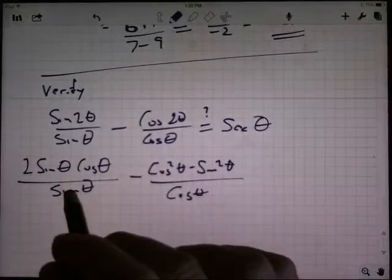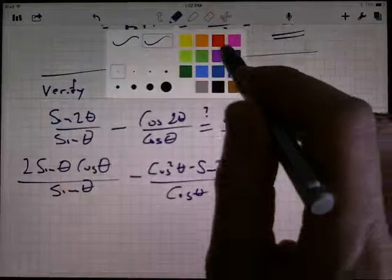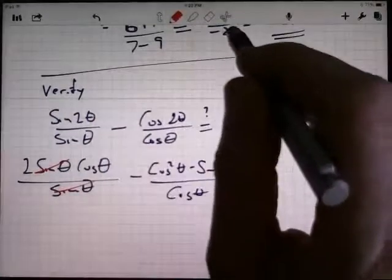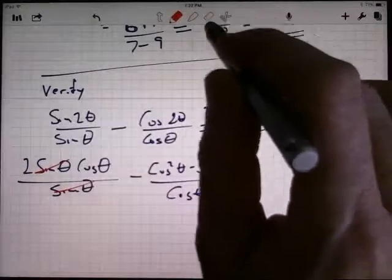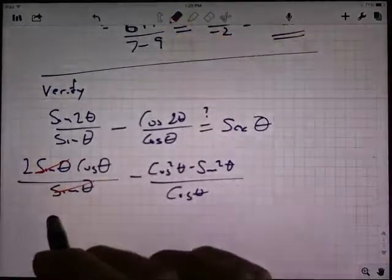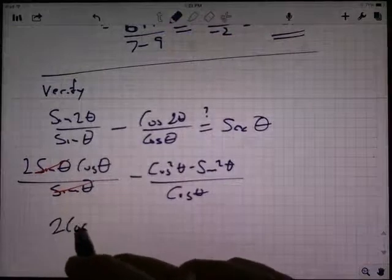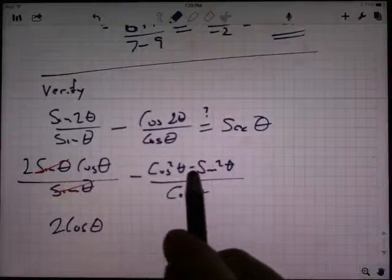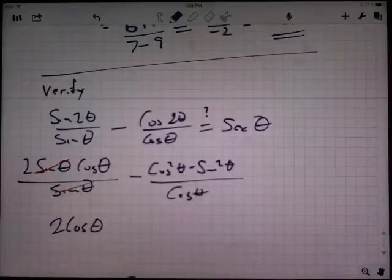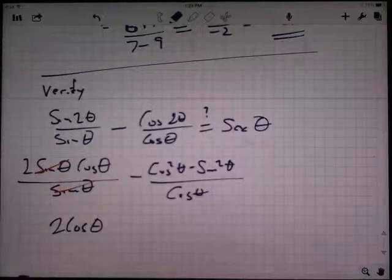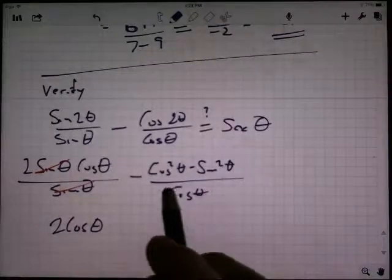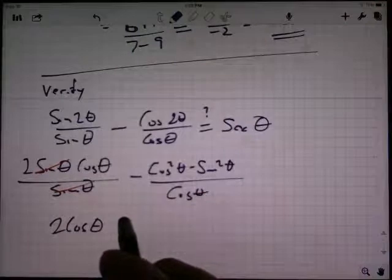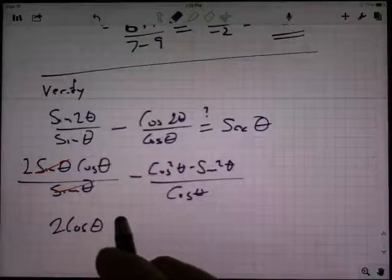Well, one thing I noticed right away is that over here, the sine thetas cancel out. I've got, in this fraction, I've got a sine theta on the top and a sine theta on the bottom. So that's going to be nice. So this just turns into a two cosine theta. I've got to be a little careful here. Some people might want to cancel out the cosines, but I can't do that because there's a minus sign in here. It's not, the top's not factored. However, I'm thinking maybe if I break this up into a couple of fractions, write it like this.